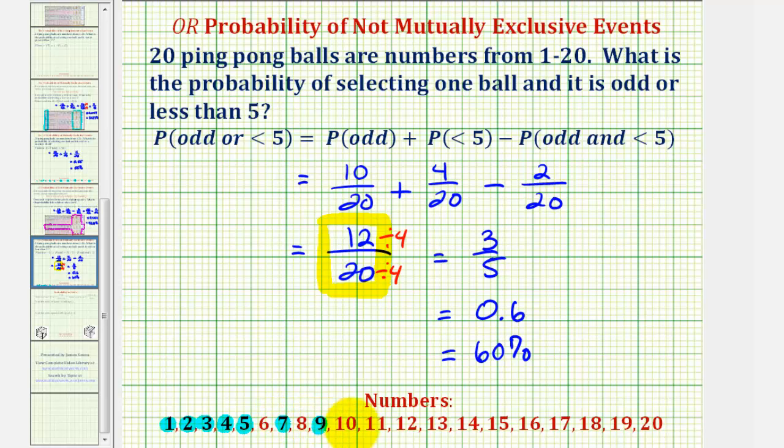So from here we just select the odds: seven, nine, eleven, thirteen, fifteen, seventeen, nineteen. Notice how there are five, six, seven, eight, nine, ten, eleven, twelve favorable ways out of 20, which we have here using the formula, to select a ball that is odd or less than 5.